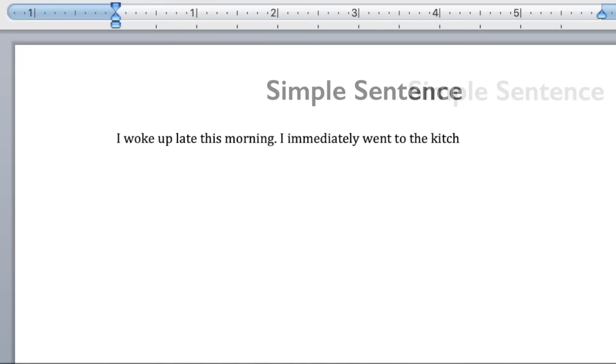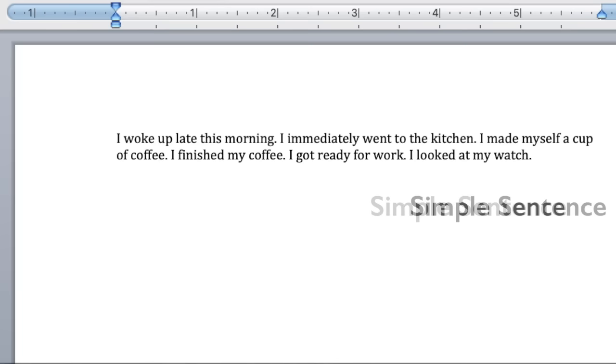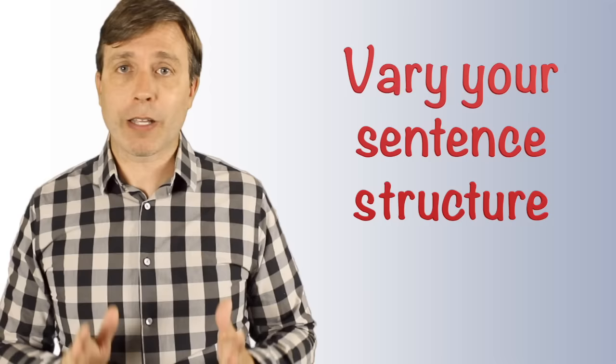If we were to change this and just use simple sentences, the story is going to sound, well, it's going to sound very choppy. If I say, I woke up late this morning. I immediately went to the kitchen. I made myself a cup of coffee. I finished my coffee. I got ready for work. I looked at my watch. I realized I was running late. I ran out the door. I jumped in my car. All right. It sounds more like a children's book and it's definitely not academic writing. So when you vary your sentence structure, it's going to help your writing have a nice rhythm and flow.